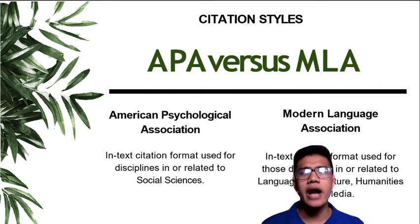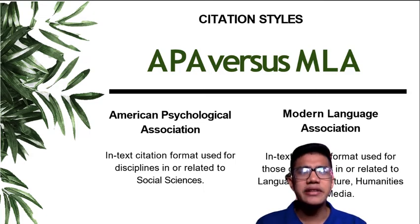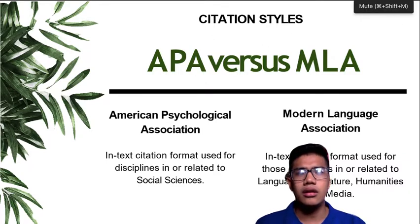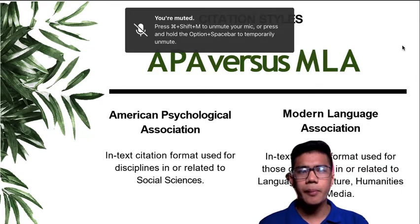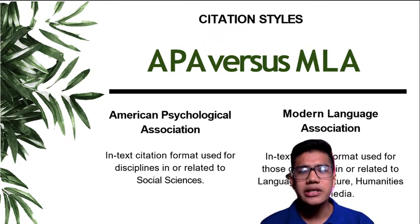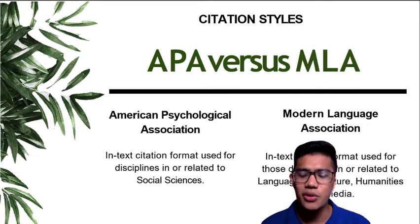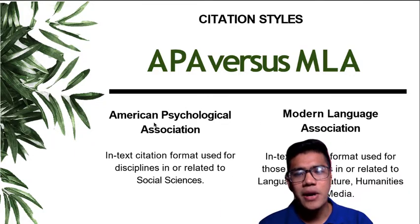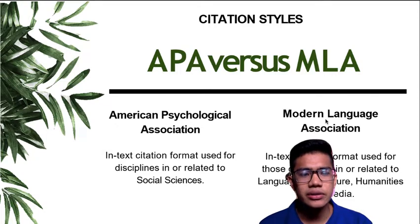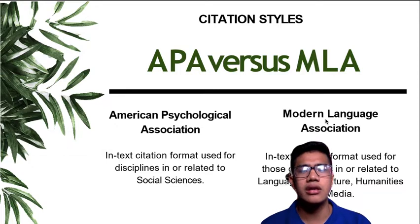When writing academic text, we use citation styles. We have different citation styles, but the main two are APA and MLA. The American Psychological Association (APA) style is for the social sciences. The Modern Language Association (MLA) style is used in the fields of language, culture, humanities, and media.